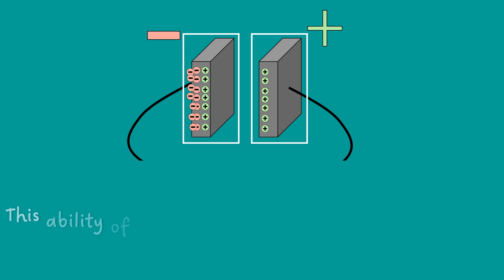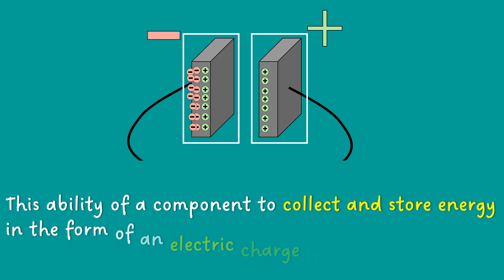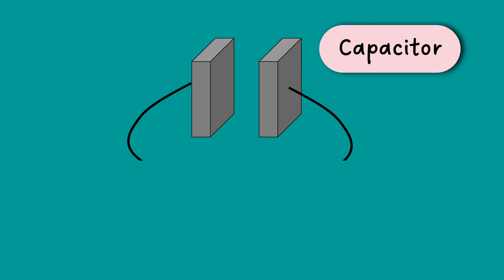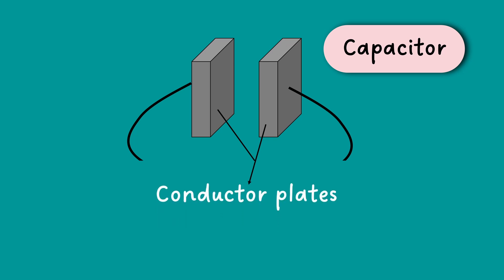This ability of a component to collect and store energy in the form of an electric charge is called capacitance. A capacitor is a device that consists of two conductor plates separated by a dielectric medium.